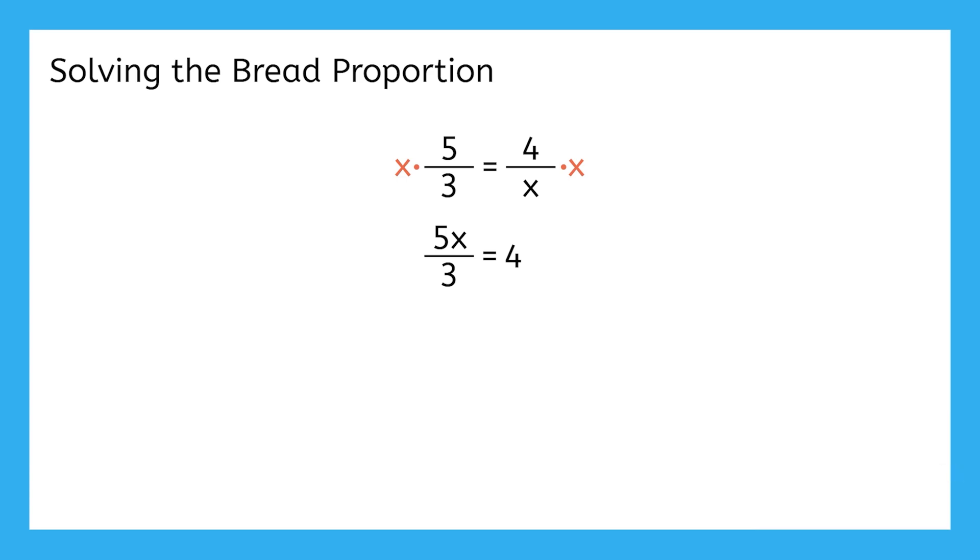I can think of this left side as being 5 over 3 times x. And to get rid of a fractional coefficient, I would multiply by the reciprocal. So I need to multiply both sides of this equation by 3 over 5, since that's what I get when I flip this fraction. On the left, the fractions cancel and leave just x. On the right, I'm going to rewrite 4 as 4 over 1, and then multiply straight across to get 12 over 5. And that's our solution for x.